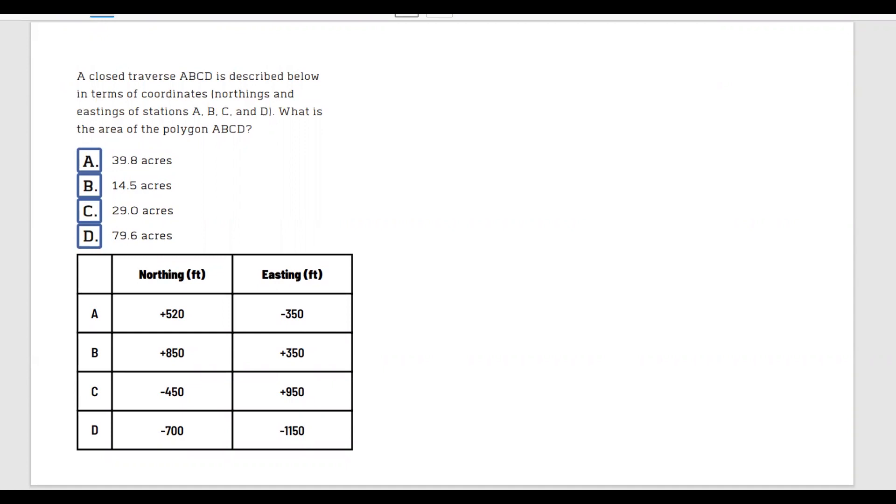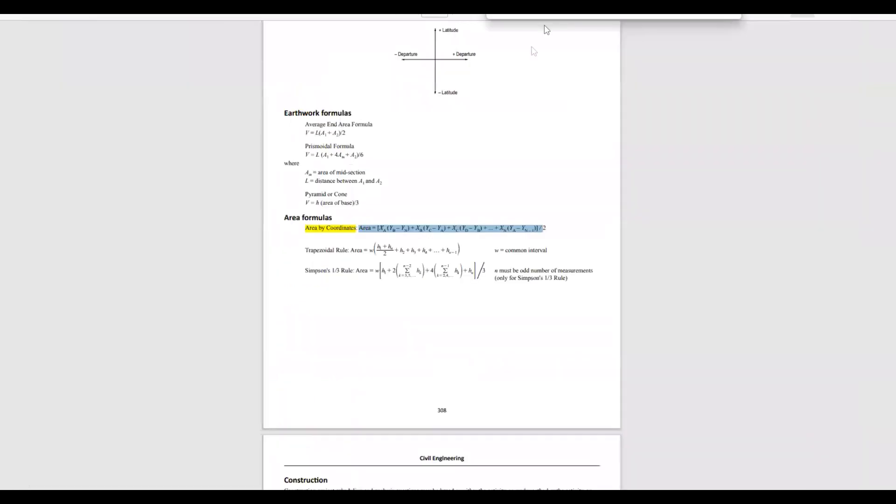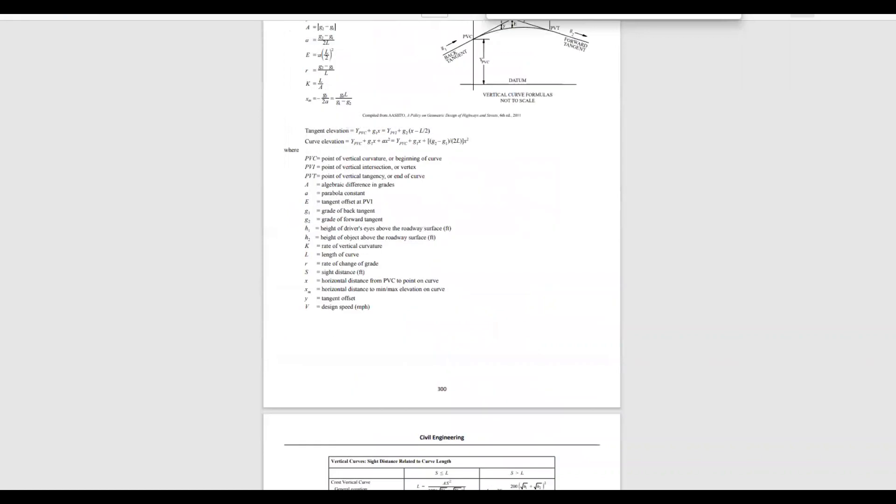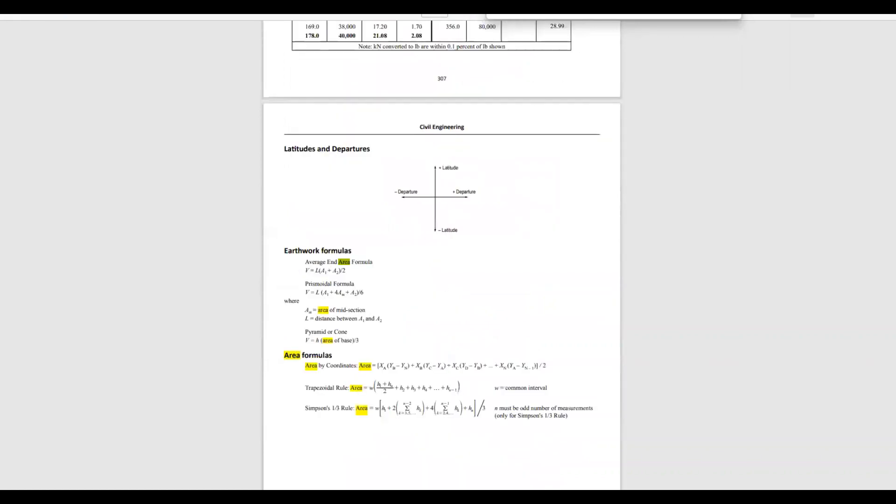We're given the coordinates of this polygon and we have to calculate the area, which means we're going to have to use the formula for area by coordinates. Let's go to the FE handbook. If you want to look for it, just type area by coordinates and it's going to get you straight to this formula which we are going to use in this problem today.